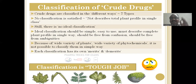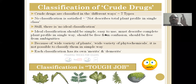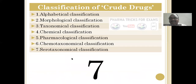Classification of crude drugs is a tough job. It is not easy. Crude drugs are classified into different ways — total seven types. No classification is fully satisfactory so far; none describes the total plant profile in a single class. There is still no ideal classification, and scope remains. Ideal classification should be very simple, easy to use, and must describe a complete plant profile.